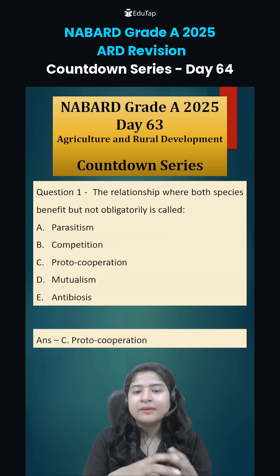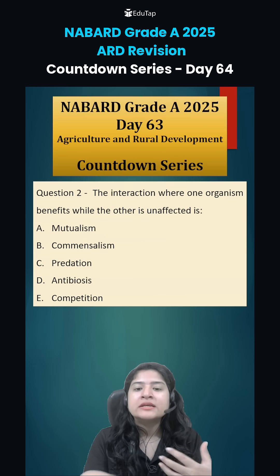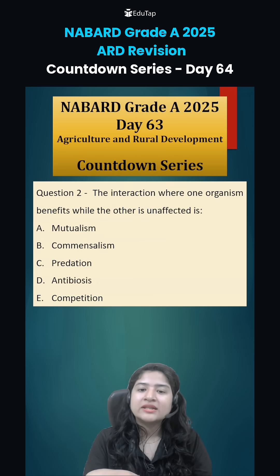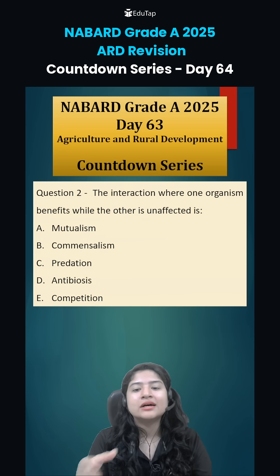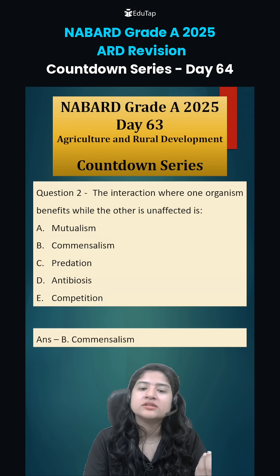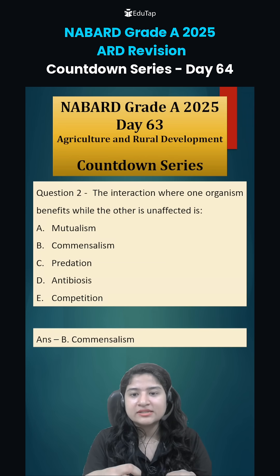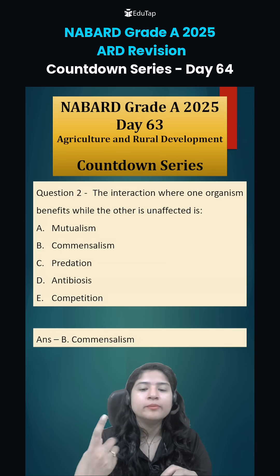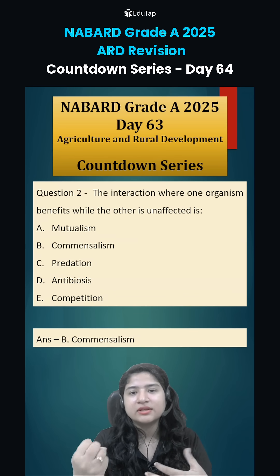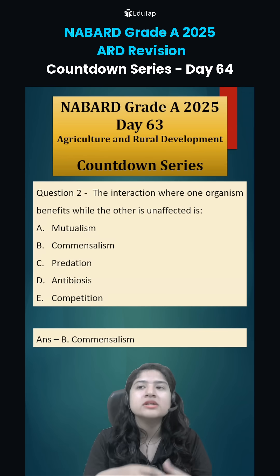The interaction where one organism benefits while the other is unaffected is known as commensalism — option number B. One benefits, but the other is unaffected: neither benefited nor any loss.